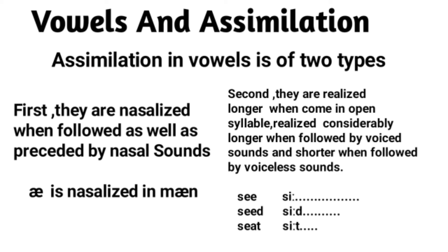We also see assimilation with vowel sounds, and it is of two types. First, vowels are nasalized when followed as well as preceded by nasal sounds. So when a vowel sound appears between nasal sounds, it gets nasalized. Consider the example of 'man' — the vowel 'ah' is preceded and followed by nasal sounds M and N.